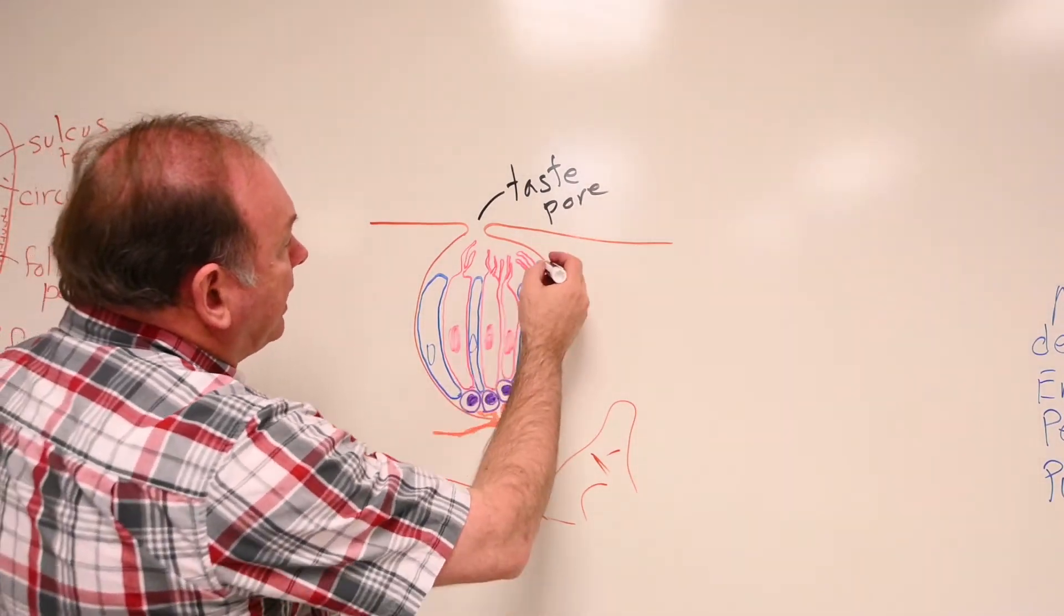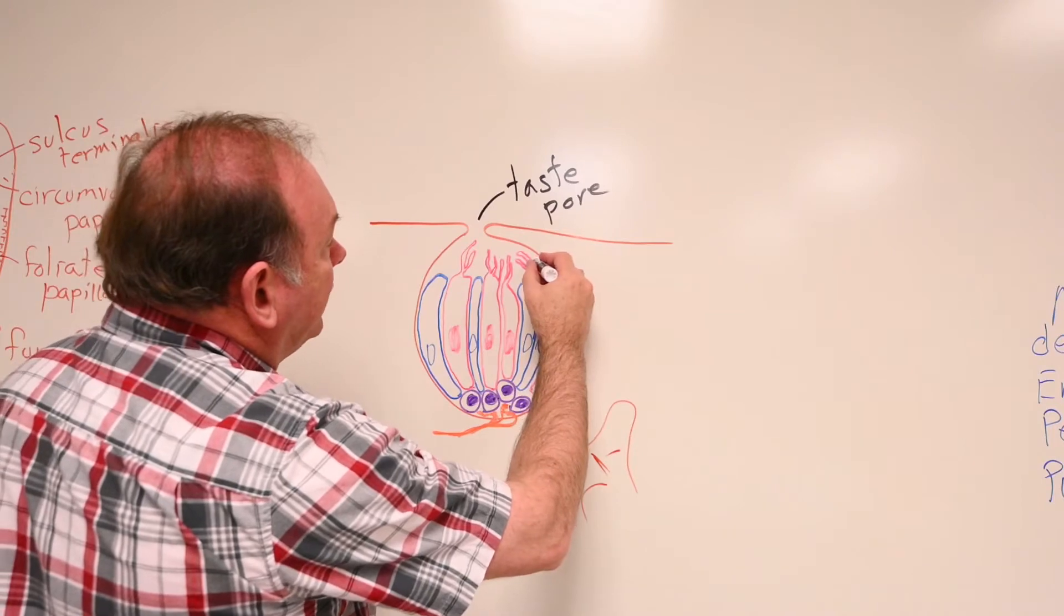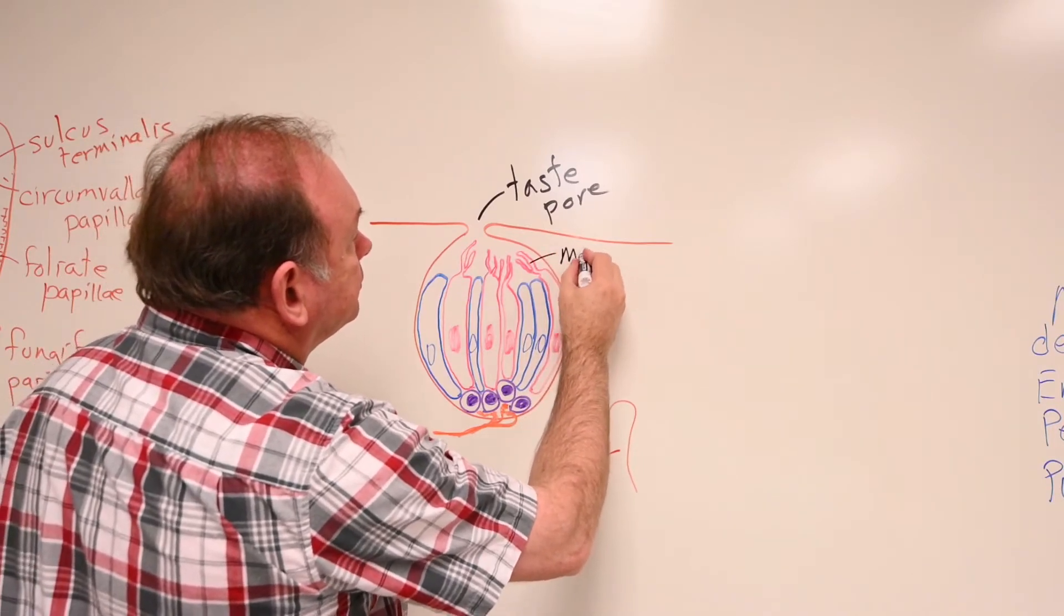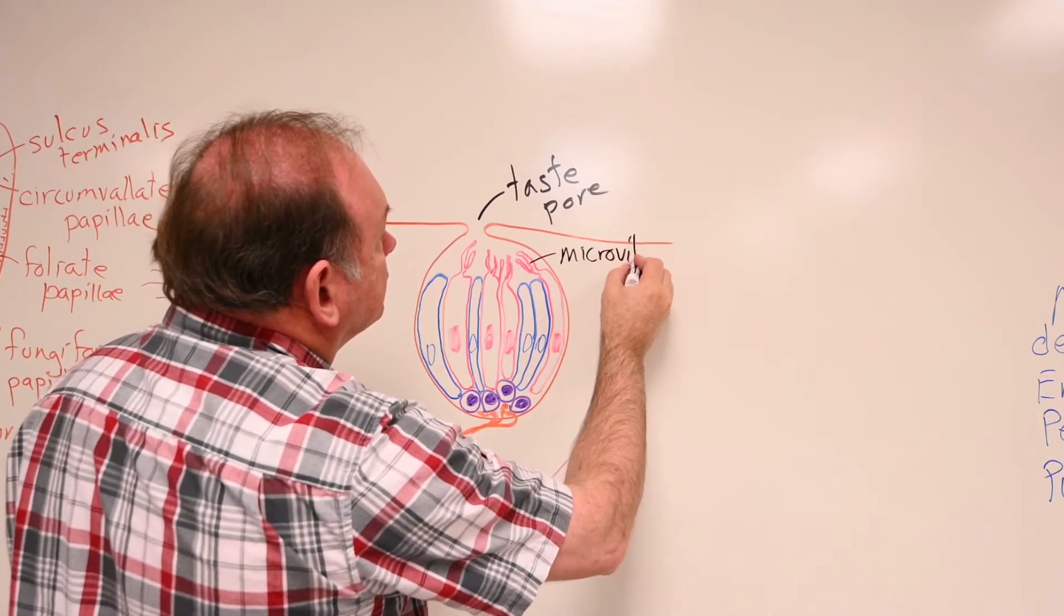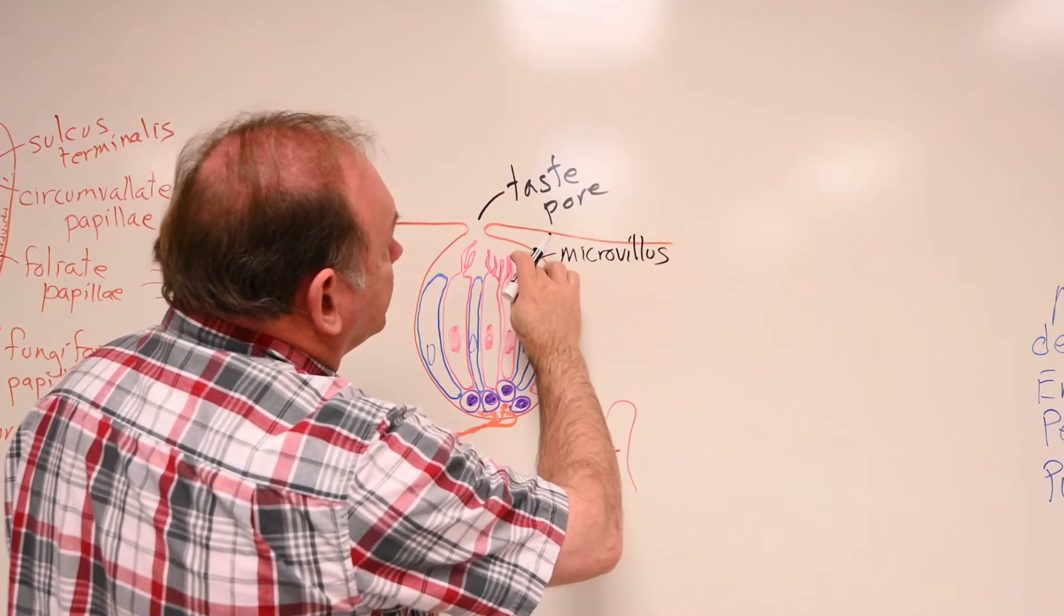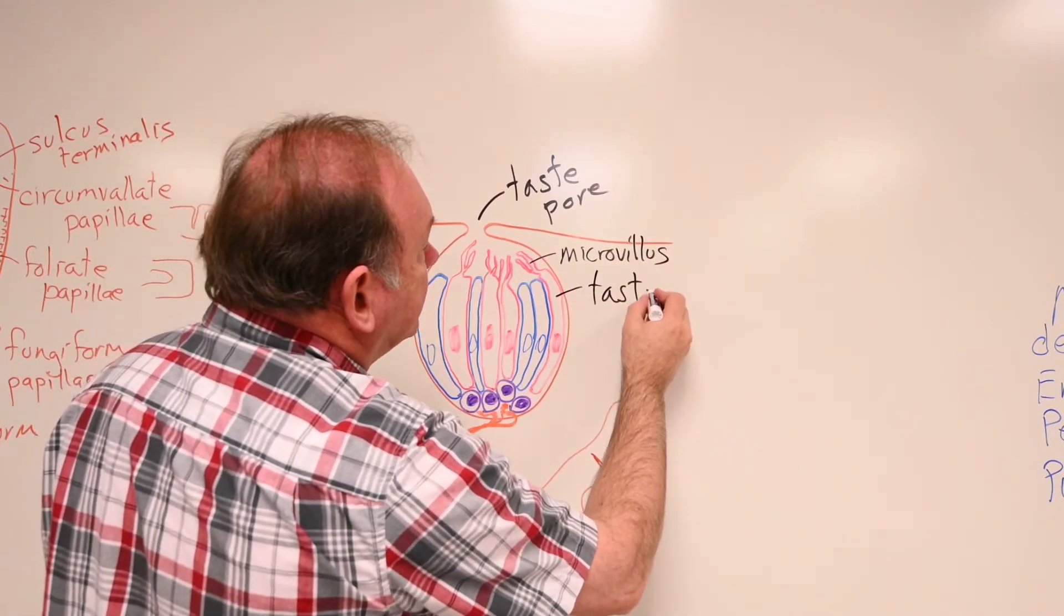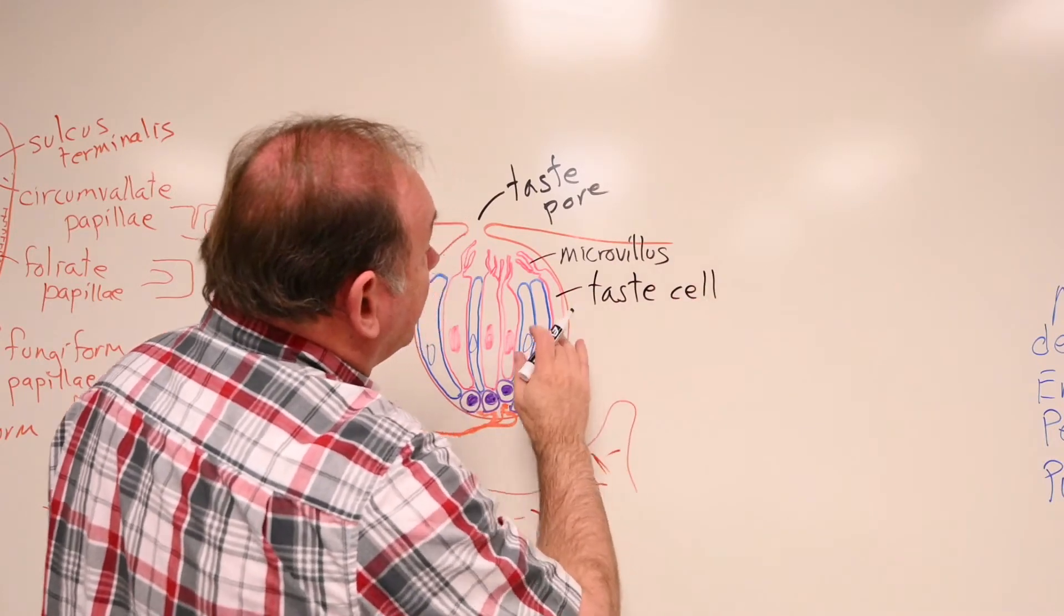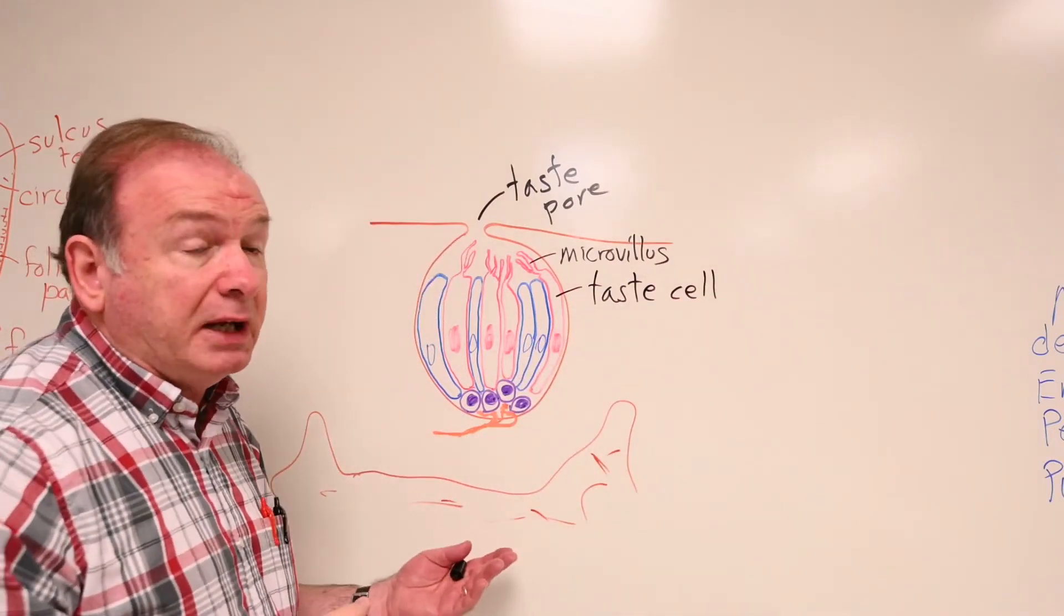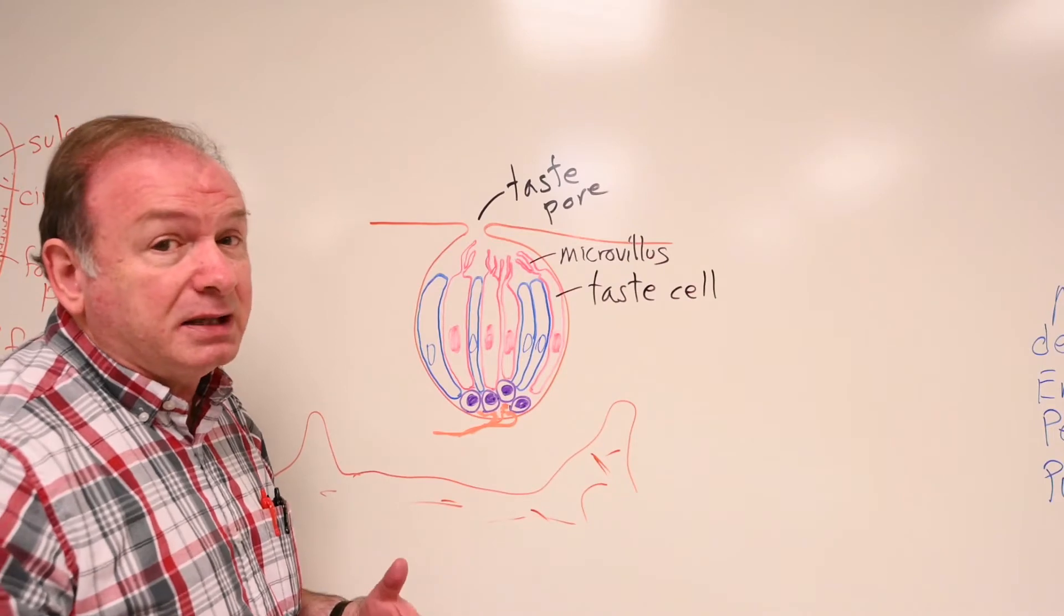Inside the taste bud, we have some cells that have microvilli. So there's a microvillus on a single taste cell. Now that taste cell could be called just a sensory cell, or it could be called a gustatory cell. Gustation is the sense of taste.